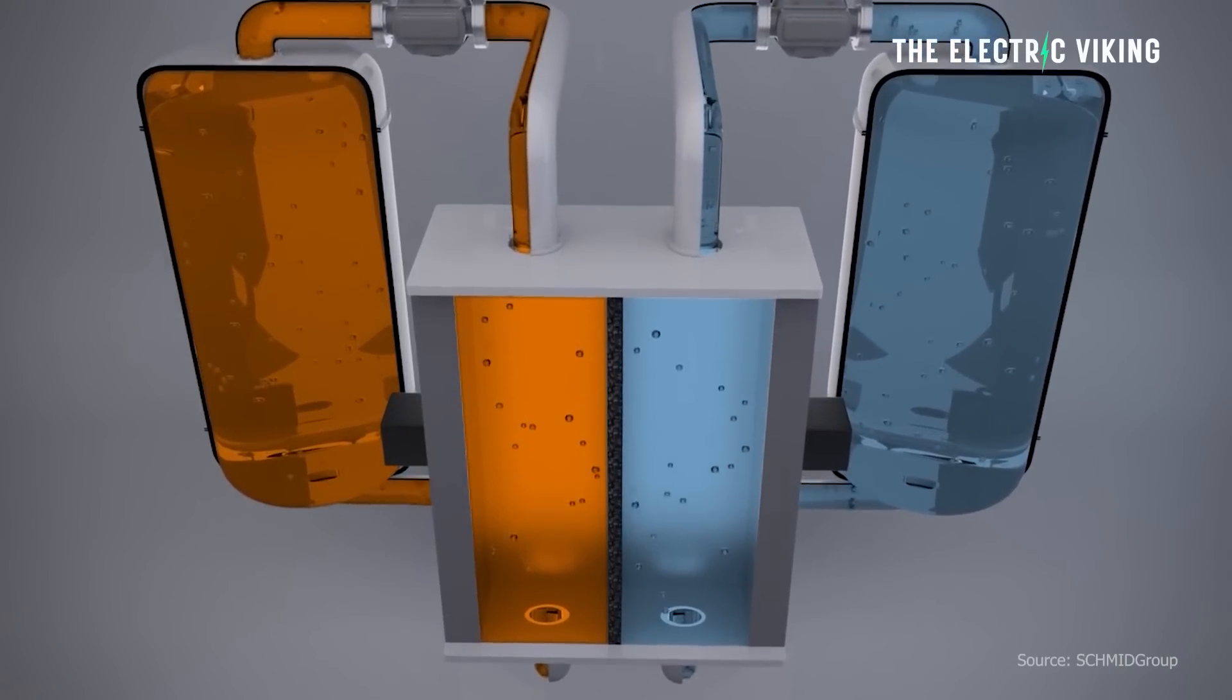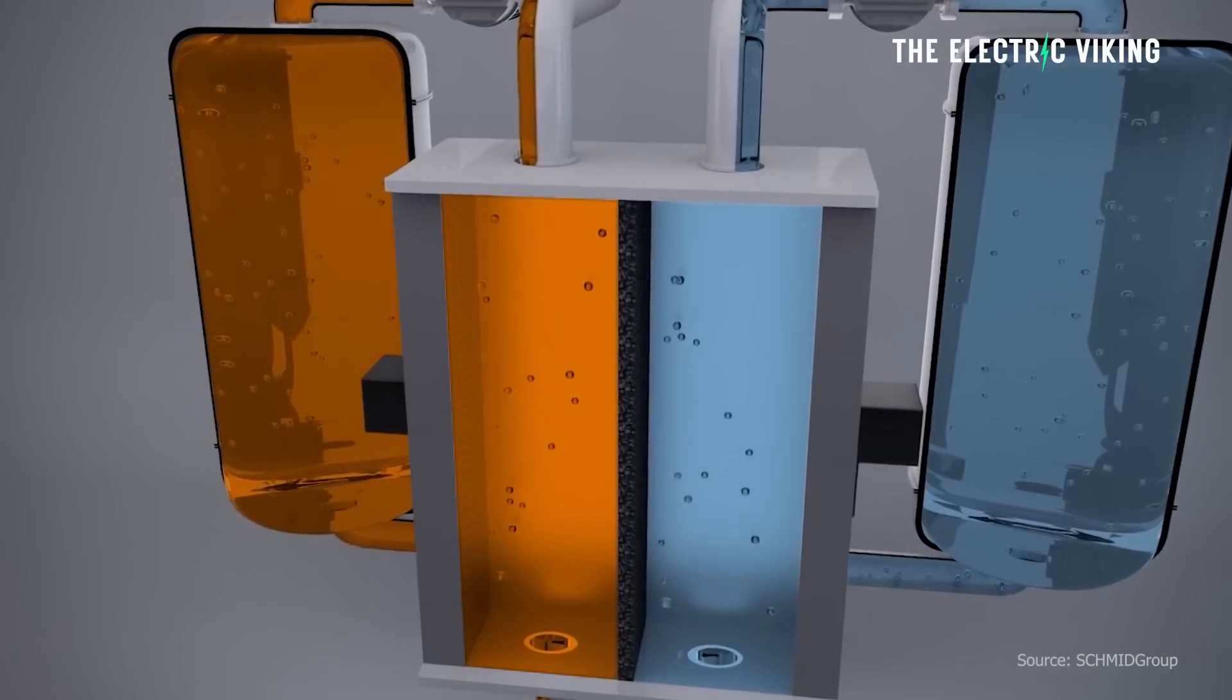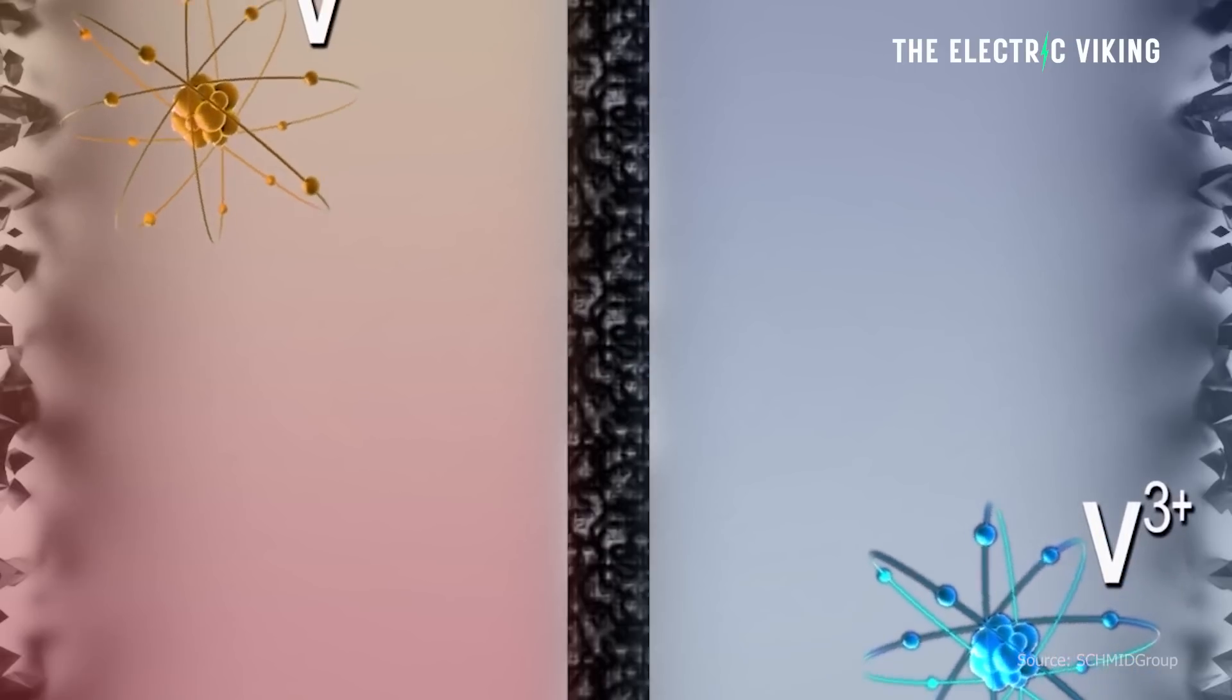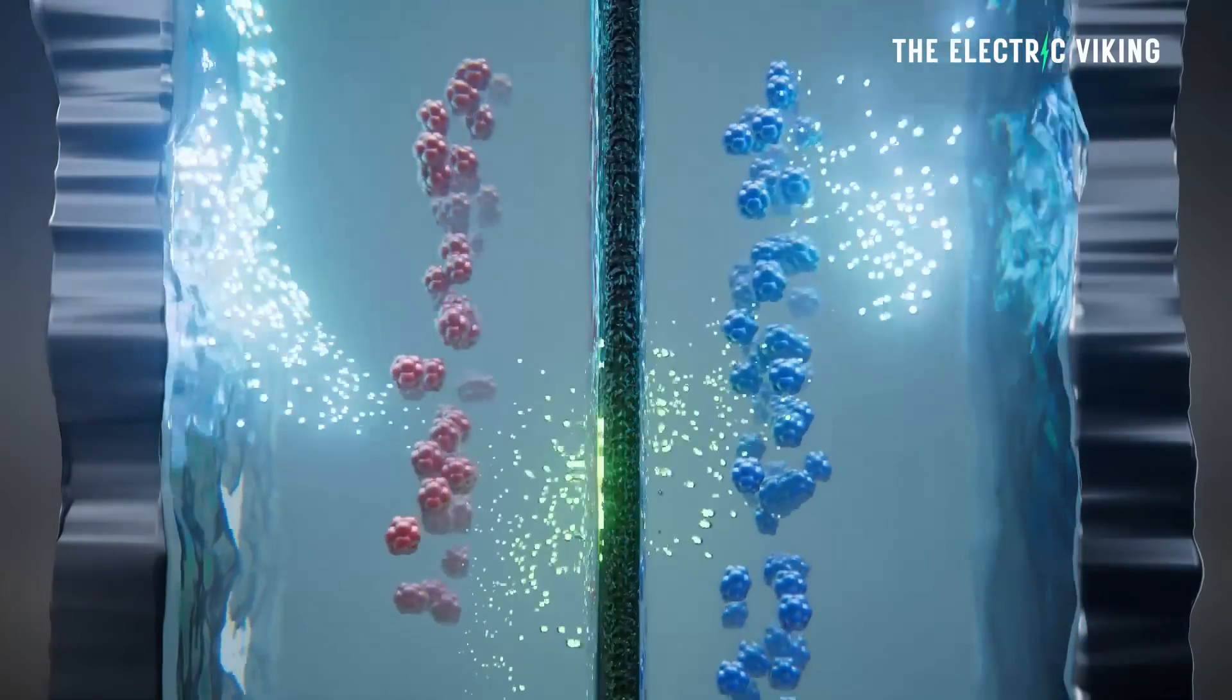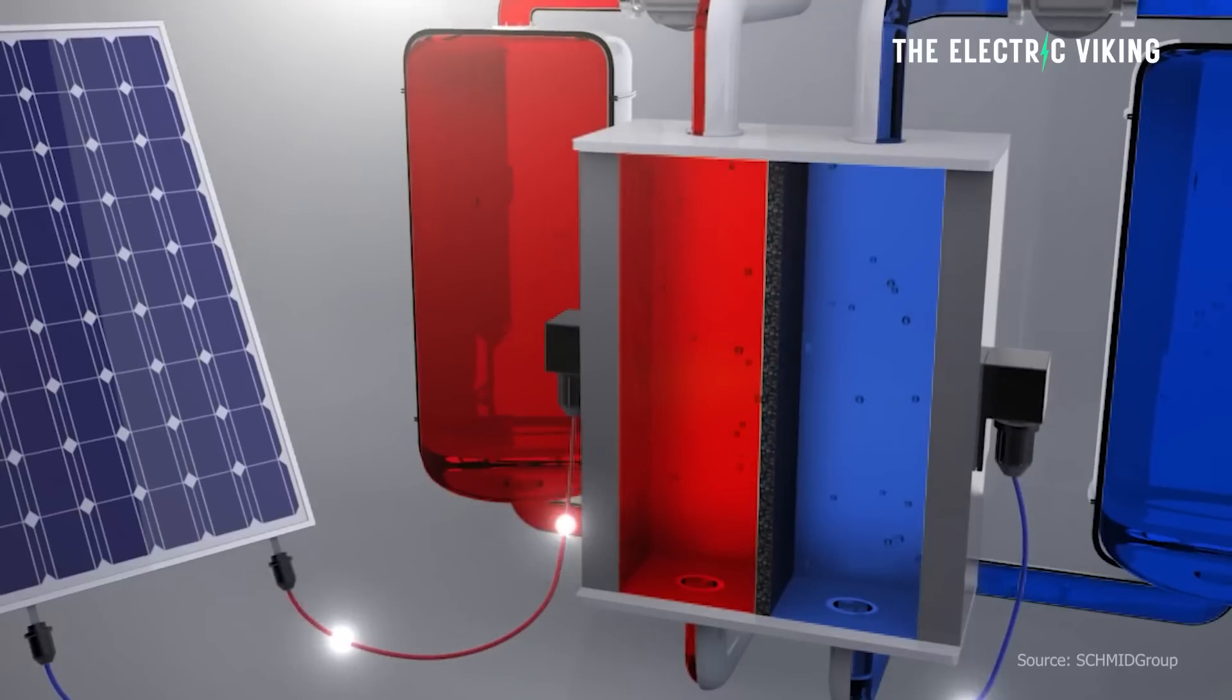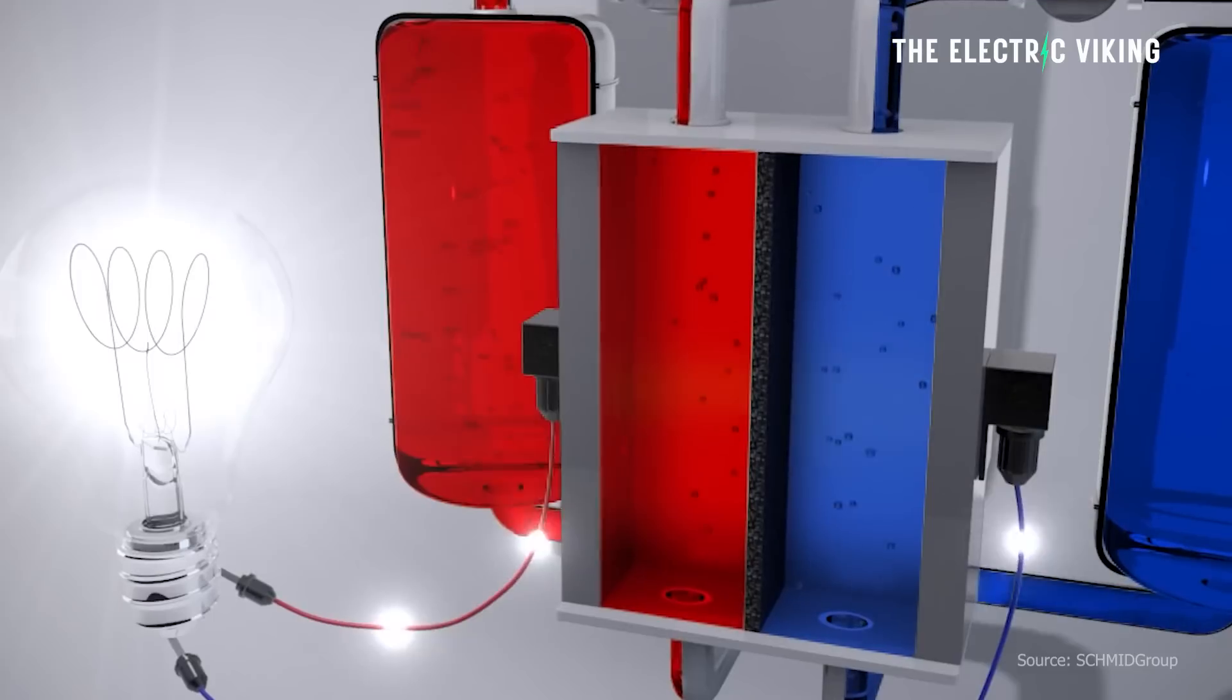One common type of flow battery is the vanadium redox flow battery. If you haven't heard of that before, I'll put a link in the description below to my video about vanadium redox flow technology. This uses vanadium ions in a different oxidation state as the electrolyte. Other types of flow batteries use different electrolyte chemistries, such as zinc bromine, iron chromium, or organic redox molecules. Flow batteries are still being developed and commercialized, and they hold promise for large-scale energy storage and grid stabilization, as well as other applications in the future.